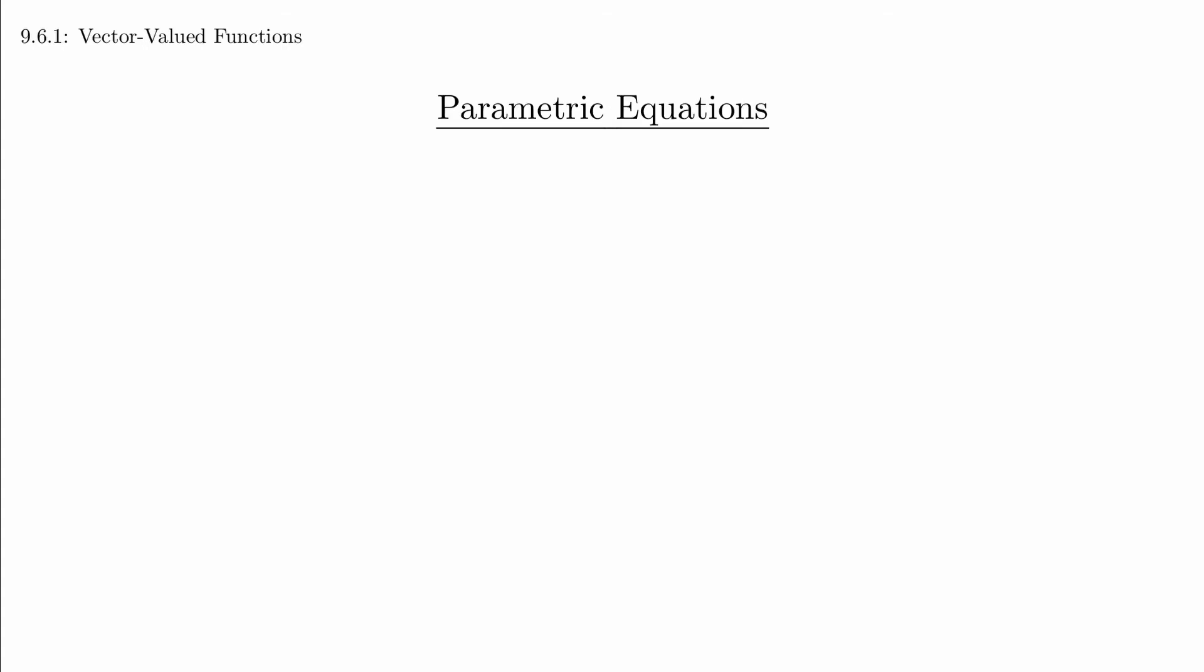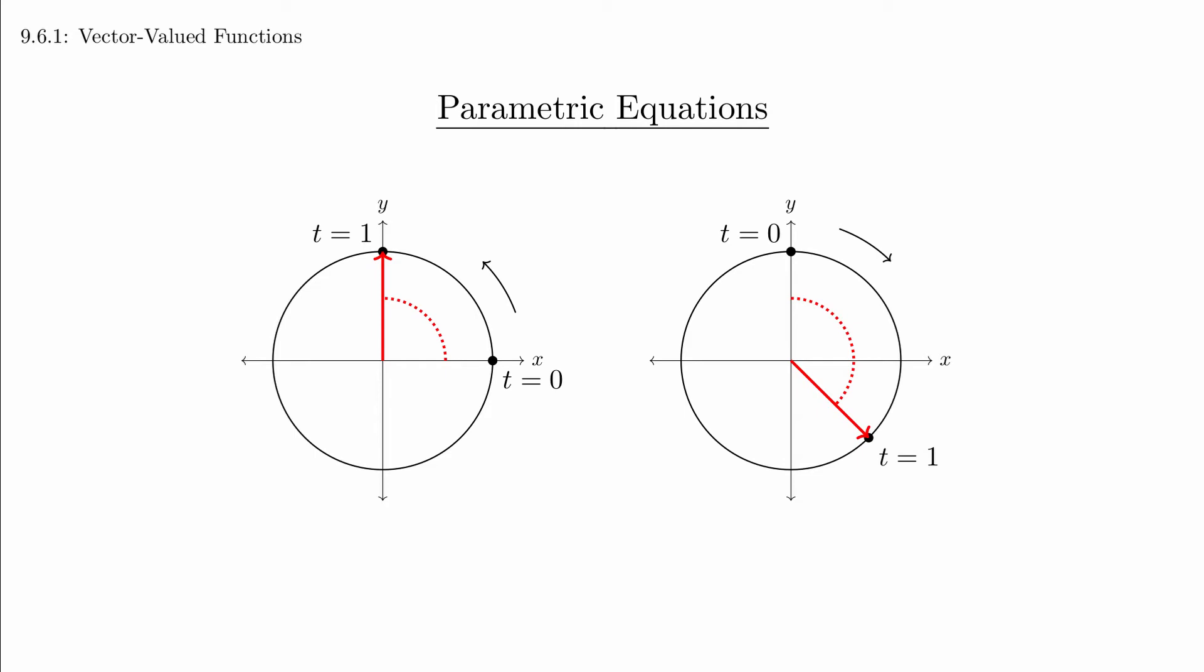When we are looking at parametric equations, it's important to recognize they have both the shape of the curve and also how we traverse the curve. Even for a curve as simple as a circle, we can have a number of different starting points, we can go in different directions, and we can go at different speeds.